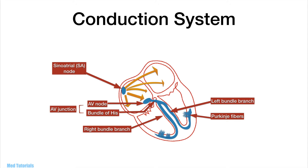The SA node is where it all starts — it is called the primary pacemaker of the heart, a small oval mass of specialized tissue capable of generating an electrical stimulus. The stimulus passes through the right and then the left atrium to reach the AV junction, which consists of the AV node and the Bundle of His. The AV junction acts as a transit center, introducing a small delay to ensure the ventricles are adequately filled before they contract. The Bundle of His then branches into the right and left bundle branches, carrying the stimulus to each ventricle, further distributed by the Purkinje fibers.